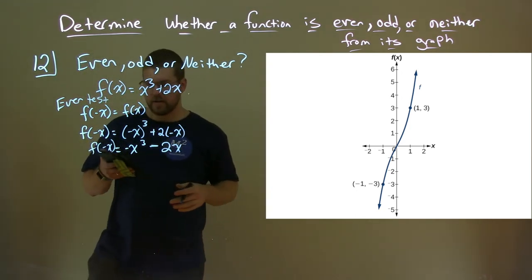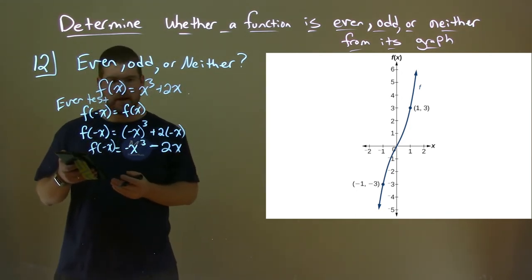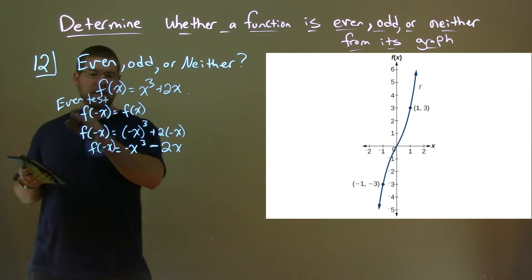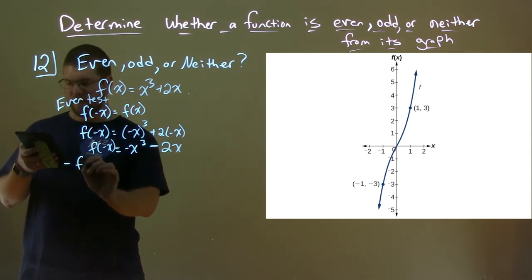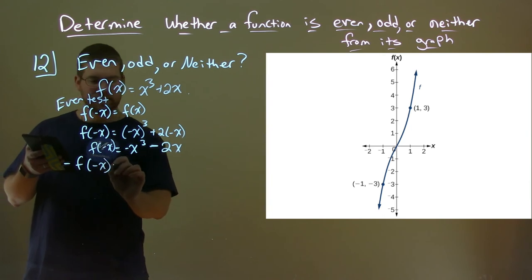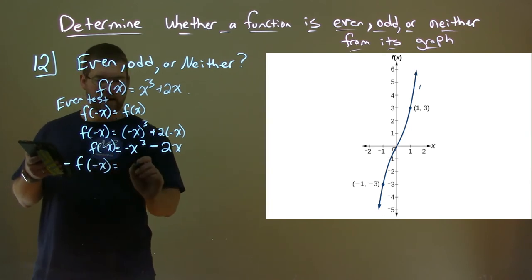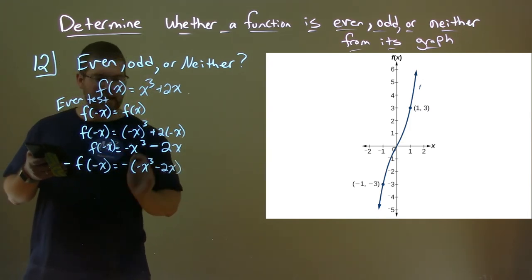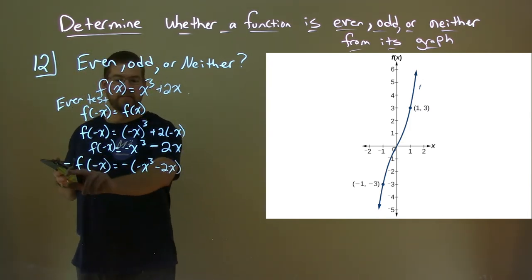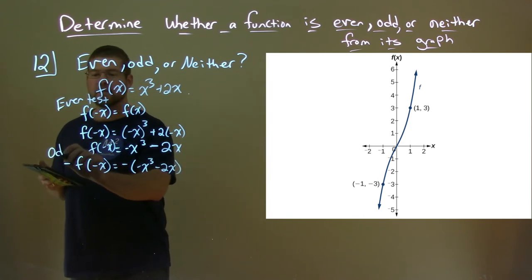To continue, we need to find the odd test. The odd test adds another reflection. We need to find -f(-x). So we take f(-x), which is -x³ - 2x, and add a negative to the outside of the whole thing. That's our odd test.